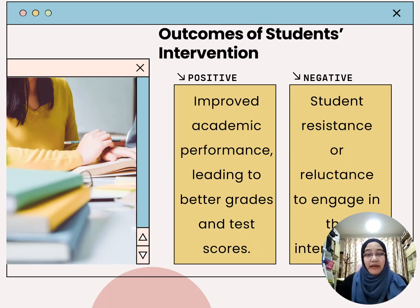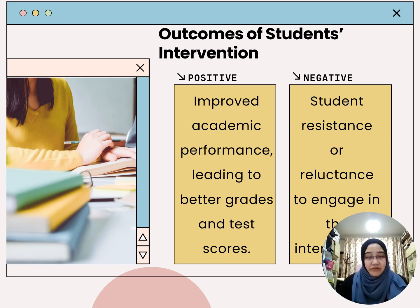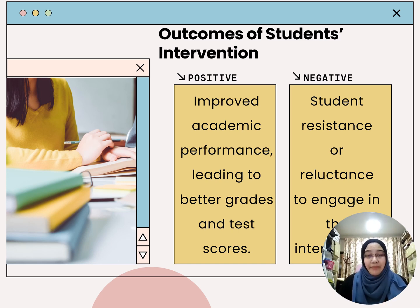Let us now look at the outcomes of student's intervention, which can be categorized into positive and negative outcomes. For positive outcomes, student's intervention can improve academic performance, leading to better grades and test scores. However, it can also bring negative outcomes if the student is resisting or being reluctant to engage in the intervention plan set by the teacher.